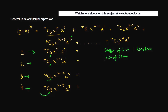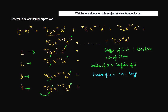Similarly, the power of a (the index of a) is equal to the suffix of C. So if you have 0 here you have 0 here, 1 here you have 1 here, 2 here you have 2 here, 3 here you have 3 here. Also, the index of x is equal to n minus the suffix of C. So if the suffix is 0 it is n minus 0, if it is 1 it is n minus 1, if 2 it is n minus 2, if 3 it is n minus 3.